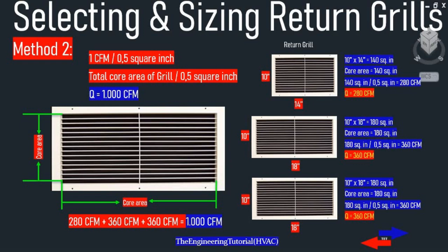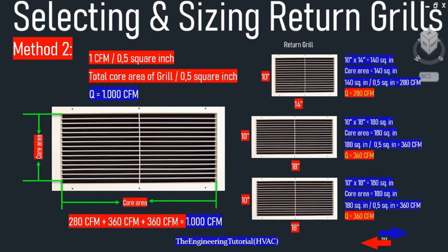For the 10 by 18 inch grills: 10 times 18 equals 180 square inches divided by 0.5 equals 360 CFM each. So the total is 280 CFM plus 360 CFM plus 360 CFM equals 1,000 CFM.